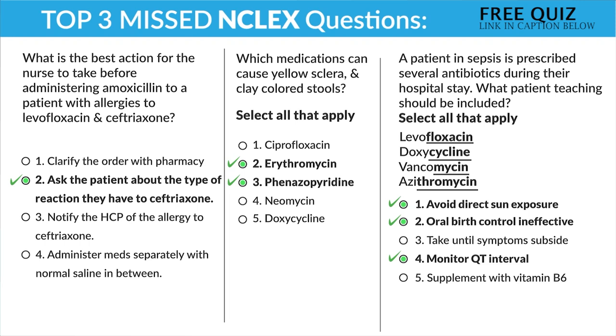Number six: monitor creatinine and BUN — definitely for vancomycin or any type of '-mycin'. Got to monitor those kidney labs.